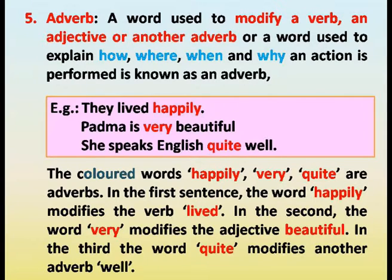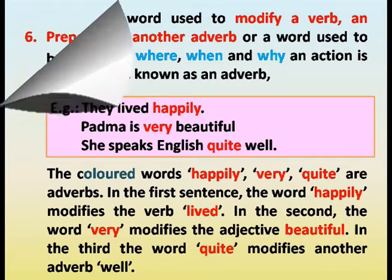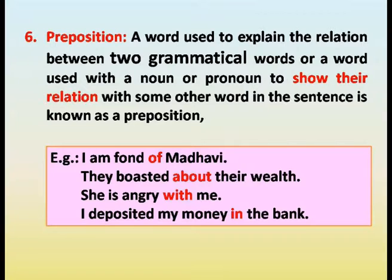Adverb. A word used to explain how, where, when and why an action is performed is known as an adverb. Examples: They lived happily. Padma is very beautiful. She speaks English quite well. The colored words happily, very, and quiet are adverbs. In the first sentence, the word happily modifies the verb lived. In the second, the word very modifies the adjective beautiful. In the third, the word quiet modifies another adverb, well.